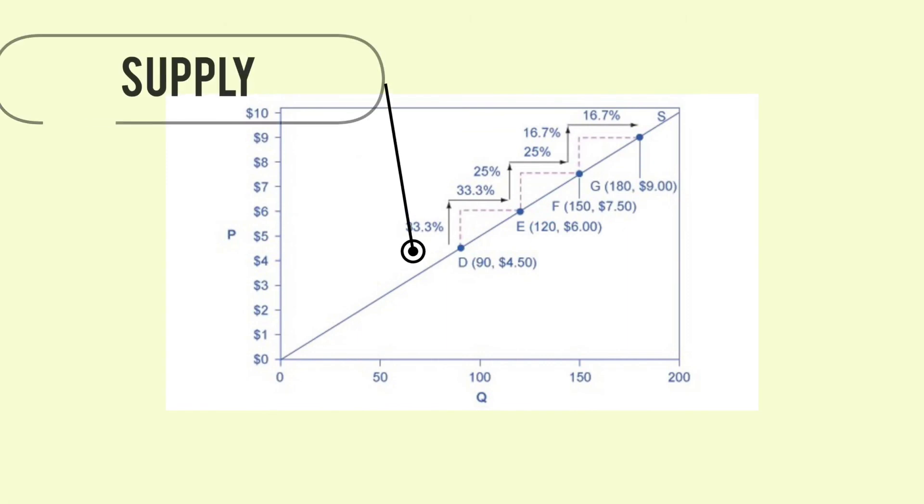Constant unitary elasticity supply curve is a straight line reaching up from the origin. Between each point, the percentage increase in quantity demanded is the same as the percentage increase in price.